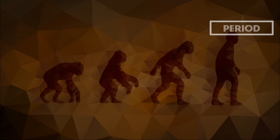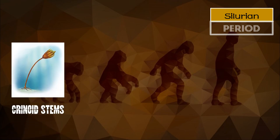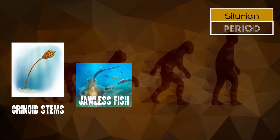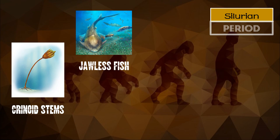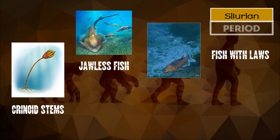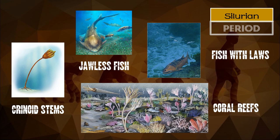Next we have the Silurian period. It extended from 443 million to 417 million years ago. Living things in the Silurian period were crinoid stems, trilobites, jawless fish, brachiopods, fish with jaws, freshwater fish, nautiloids, gastropods, and coral reefs.